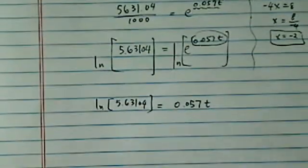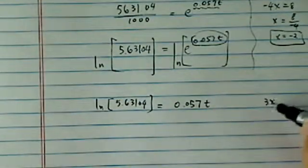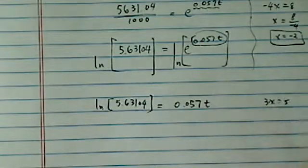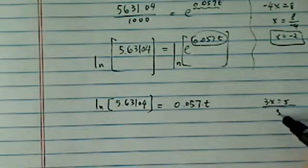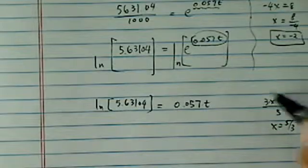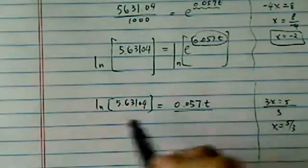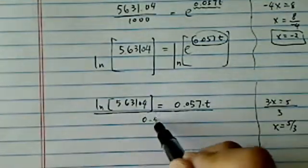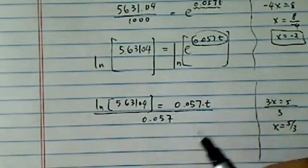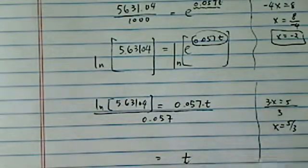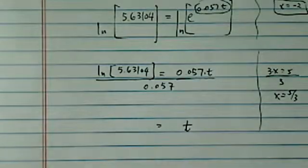So from here, all we have to do is just like solving 3x equal to 5. We're going to divide because the opposite of multiplication is division. We're going to do exactly the same thing. We're going to divide by 0.057. Then on my right-hand side, I have t all by itself, which is what solving an equation means anyway.